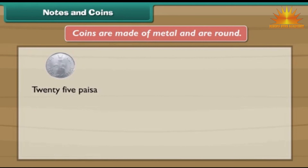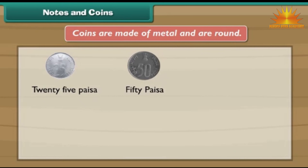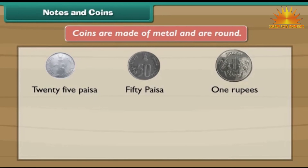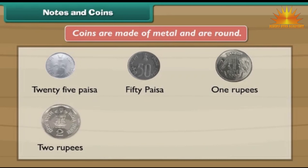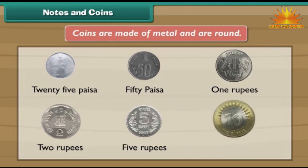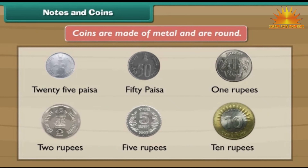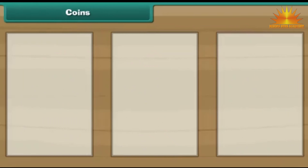Coins are made of metal and are round. There are 25 paisa, 50 paisa, 1 rupee, 2 rupee, 5 rupee and 10 rupee coins.